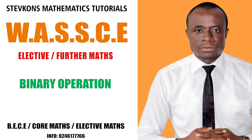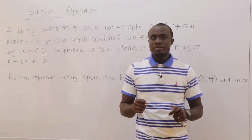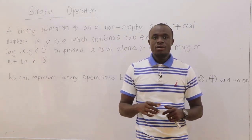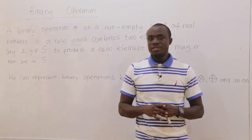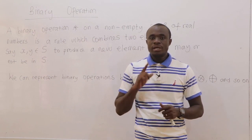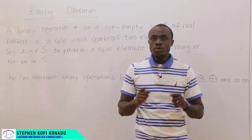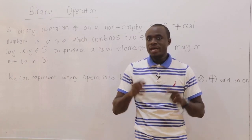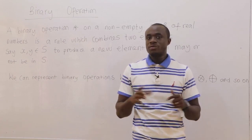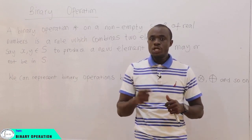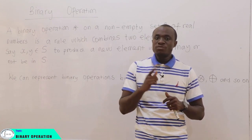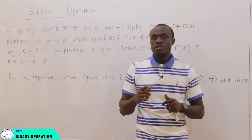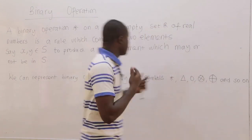Our topic today is binary operation. A binary operation, let's say star, on a non-empty set S, is a rule which combines two elements, say x and y, members of a particular set S, to produce a new element which may or may not be in the set S.